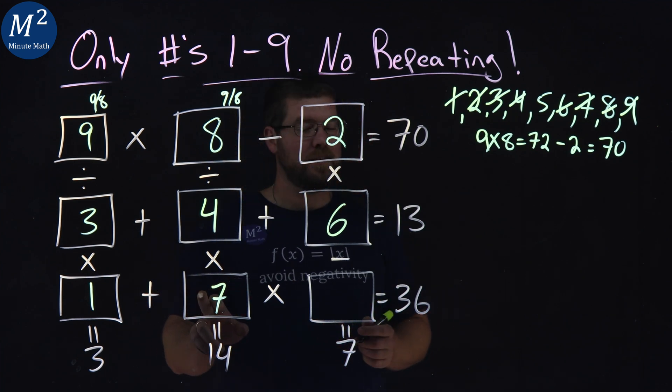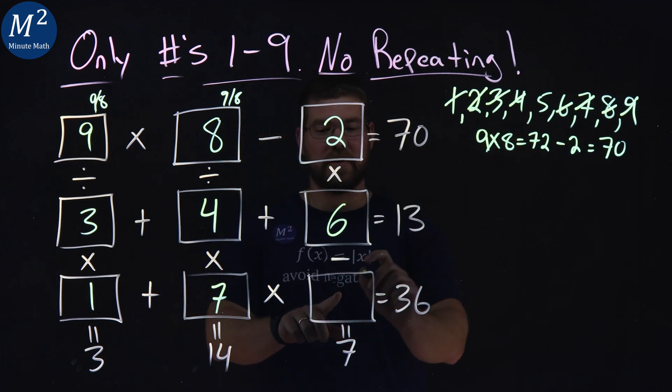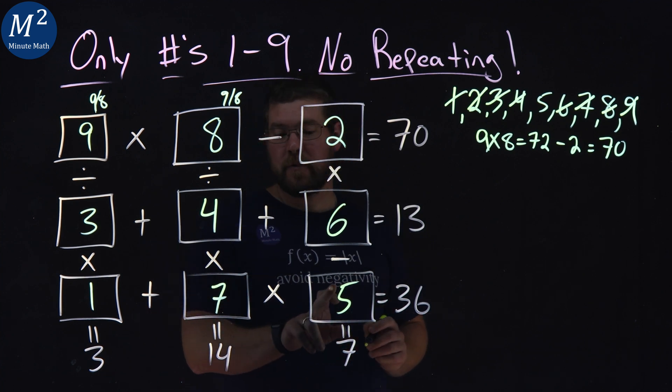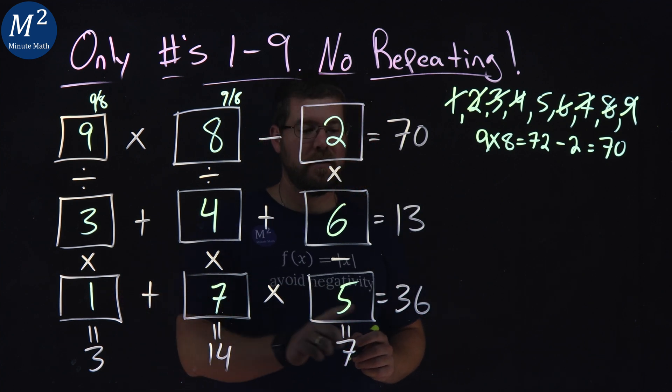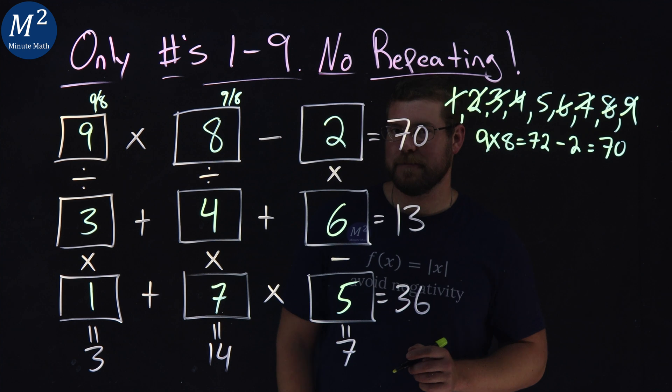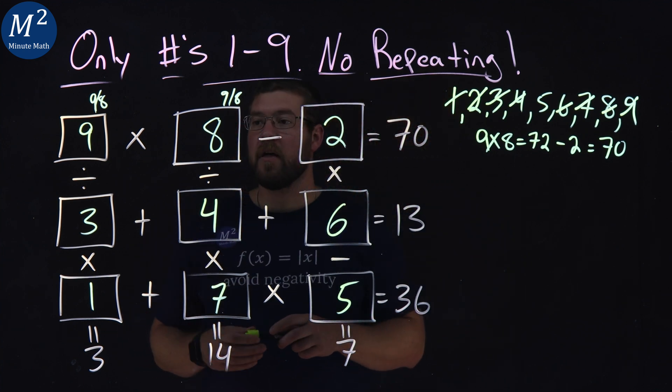Seven plus six is 13, and then our last one here, this is tricky, seven times a five, order of operations, five is left over. Seven times a five is 35, plus one is 36, and there we have it.